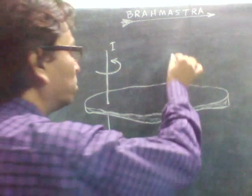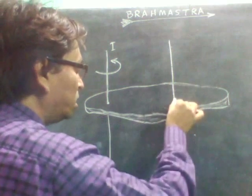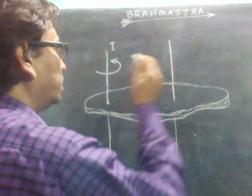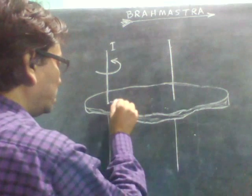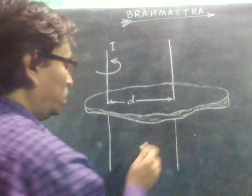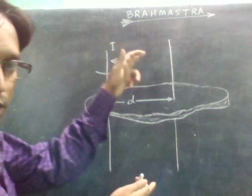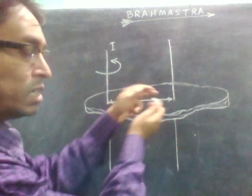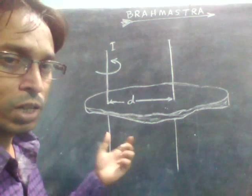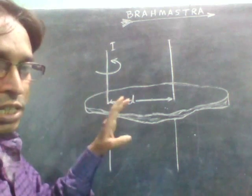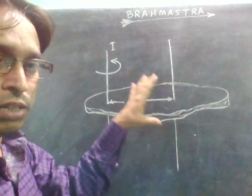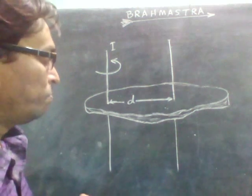Say we want to know the moment of inertia of the body about this new axis, at a distance D from the previous axis. So this new axis is parallel to the previous axis but at a distance D from it. This is the condition for the parallel axis theorem.